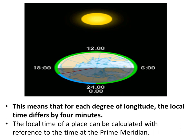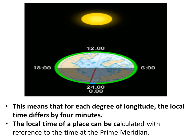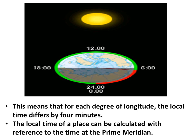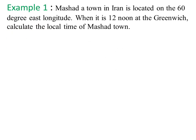The local time of a place can be calculated with reference to the time at the prime meridian. To understand this, we will see some examples. Example 1: Mashar, a town in Iran, is located on the 60 degree east longitude. When it is 12 noon at Greenwich, calculate the local time of Mashar.